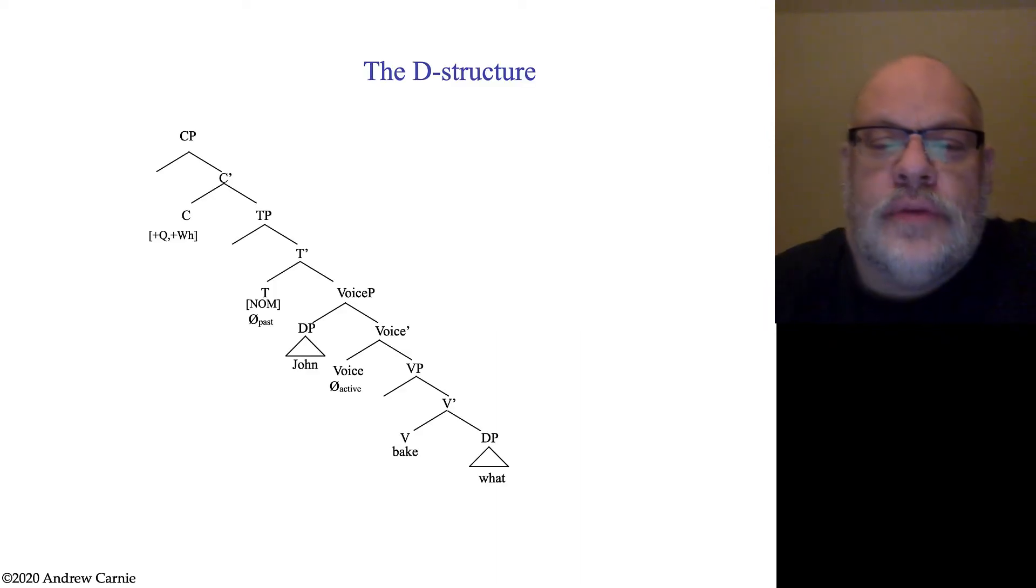So, the sentence we're going to do is what did John bake? We're going to start off by drawing the D structure. Remember, the D structure is essentially the structure that is created that meets the Theta criterion. So, it puts items into the sentence in the position where they would receive their Theta roles.